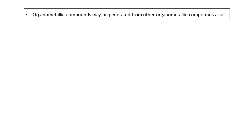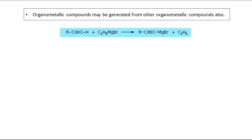Organometallic compounds can also be generated from other organometallic compounds. Starting from a terminal alkyne C≡C-H with ethyl magnesium bromide, the ethyl part acts as a carbanion and captures the acidic hydrogen, forming ethane (CH₃CH₃). The MgBr part then attaches to the alkyne carbon, giving a newly generated organometallic compound with a C-Mg bond.